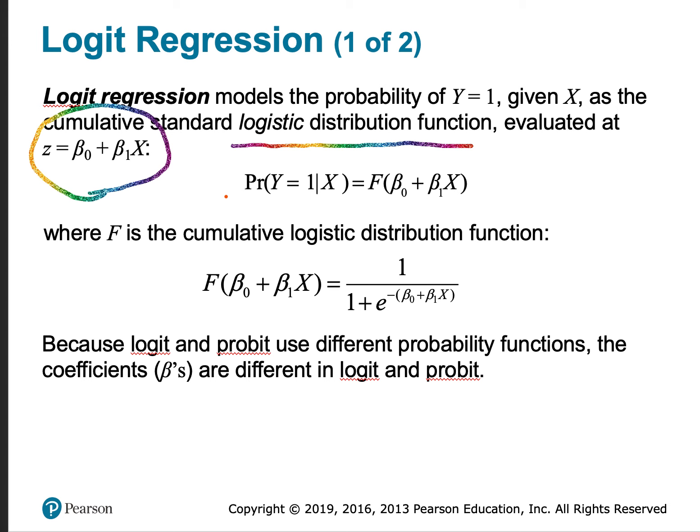So we have that the probability that y equals 1 given x is equal to the cumulative standard logistic distribution function of beta naught plus beta 1 times x. And what is this cumulative logistic distribution function? It's 1 over 1 plus e to the power of negative beta naught plus beta 1 times x.